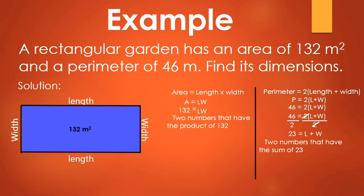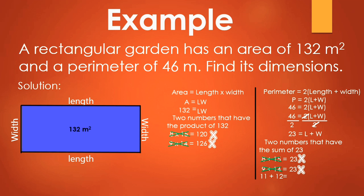Let's try two factors. 8 + 15 gives us 23, but 8 × 15 = 120 — not the factors we're looking for. How about 9 + 14? That gives 23, but 9 × 14 = 126 — also not correct. How about 11 + 12? That gives 23, and 11 × 12 = 132. Yes, those are the factors we are looking for.